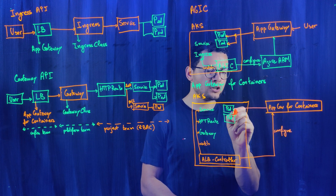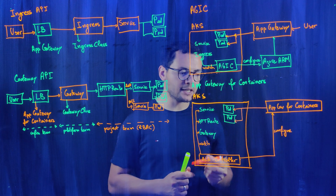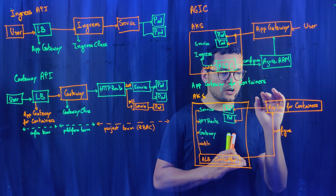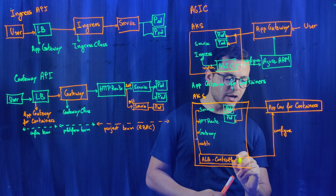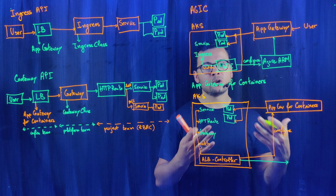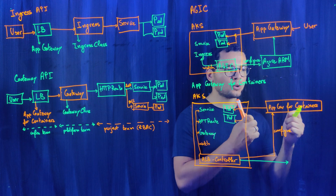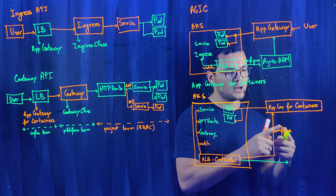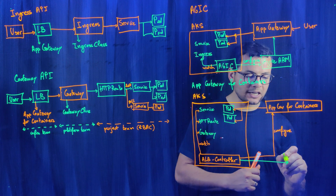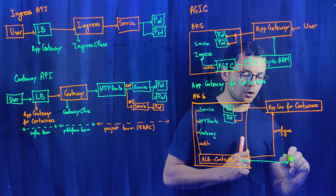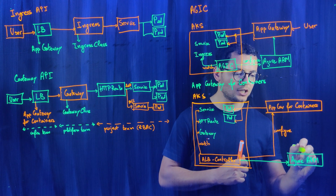The App Gateway for Containers can reach the pods because it is in the same subnet, the same VNet, or a peered VNet as the AKS VNet. There is one use case where the Azure ARM is still used: when using bring-your-own gateway for containers. With Application Gateway for Containers, you can either manually configure your own gateway — creating frontends and subnet associations — or let the ALB Controller do that work for you. If the ALB Controller handles it, it will call the Azure ARM, but only during the initial creation of the containers, so it runs just once.